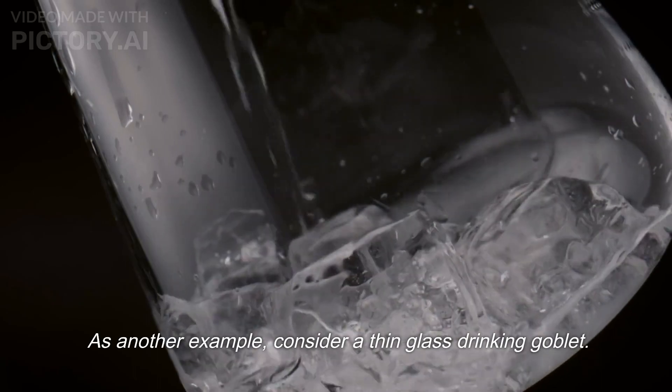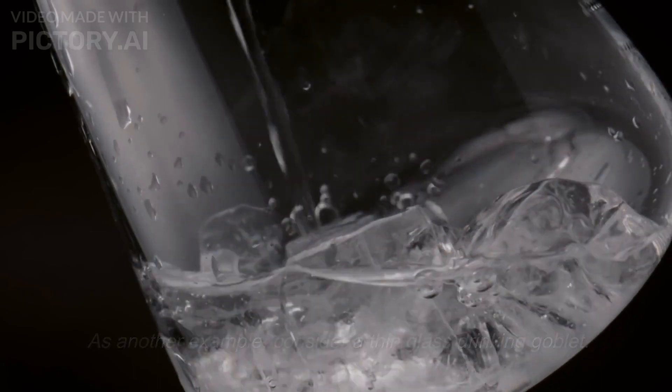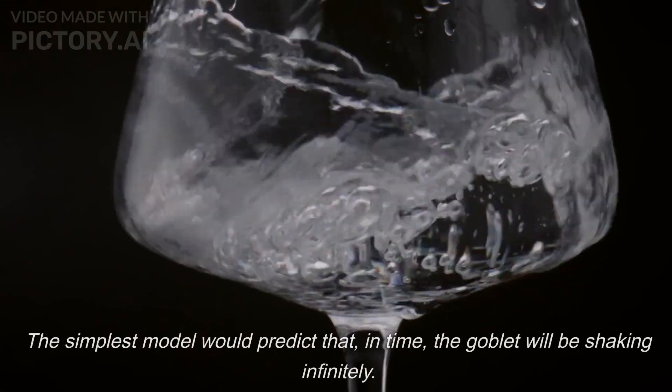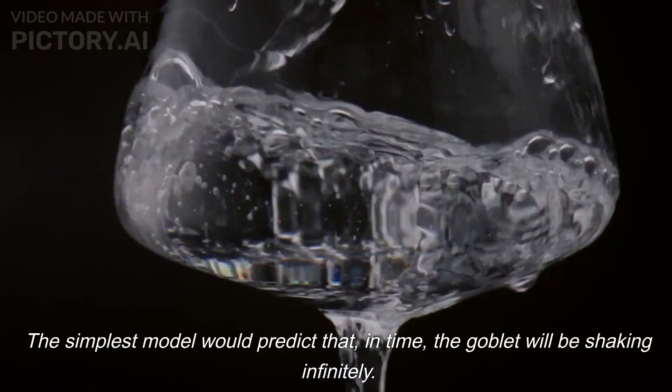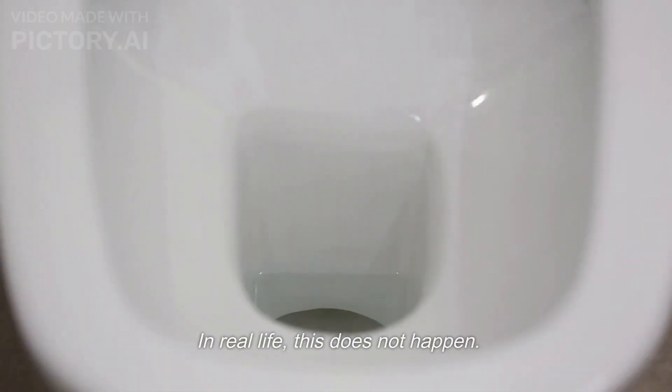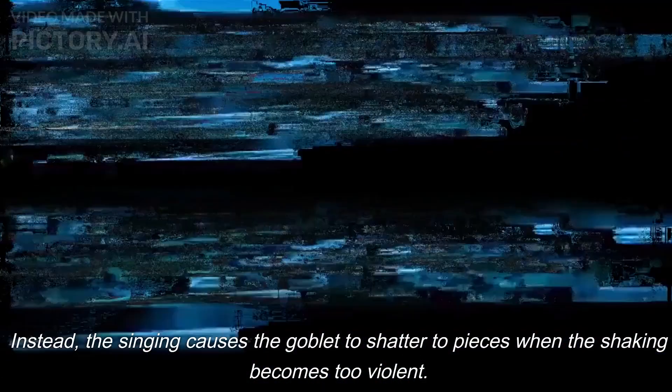As another example, consider a thin glass drinking goblet. If a singer sings a note at the right pitch, the goblet begins to shake more and more. The simplest model would predict that, in time, the goblet will be shaking infinitely. In real life, this does not happen. Instead, the singing causes the goblet to shatter to pieces when the shaking becomes too violent.